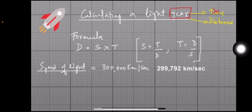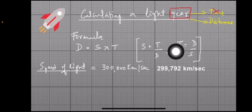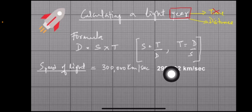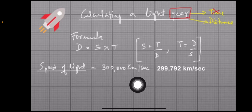To calculate the distance, we use the speed of light. The speed of light is used to reach the sun or other planets — for example, Jupiter. The speed of light is 300,000 kilometers per second.